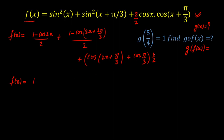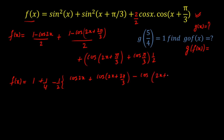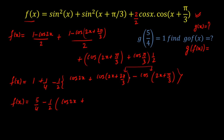Collecting constant terms: 1/2 + 1/2 gives 1, and (1/2)·cos(π/3) = (1/2)·(1/2) = 1/4, so the constant part is 5/4. Taking negative common from the remaining trig terms, I get: −(1/2)[cos 2x + cos(2x + 2π/3)] − cos(2x + π/3). I'll now apply the cos C − cos D formula to simplify these two terms.